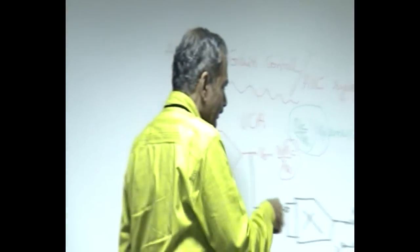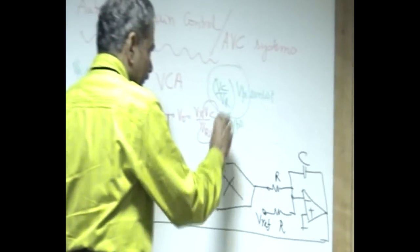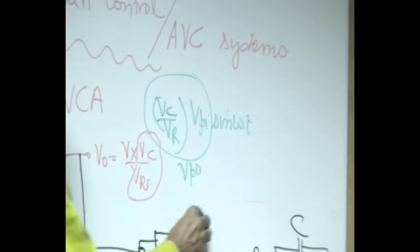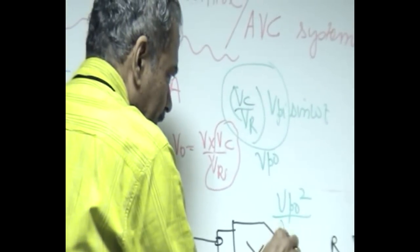Therefore, we want to detect the amplitude. Let us call this V_po. This V_po is applied to both inputs of the multiplier to detect the magnitude of the input.